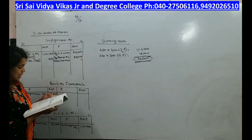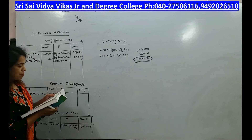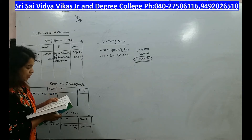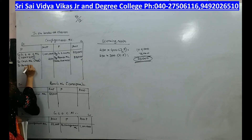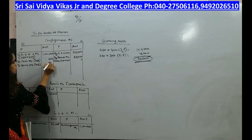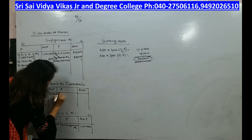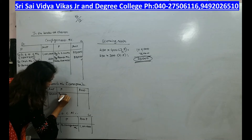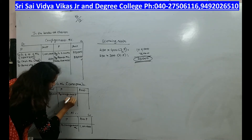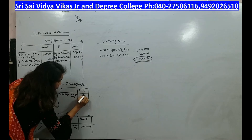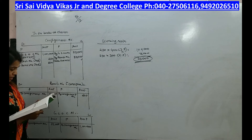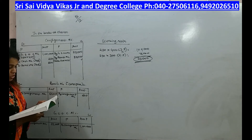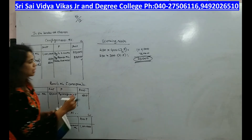Expenses paid by Ramu: freight 600. So in Ramu's account we write: expenses 600. In the consignment account we write: by consignment account 600.